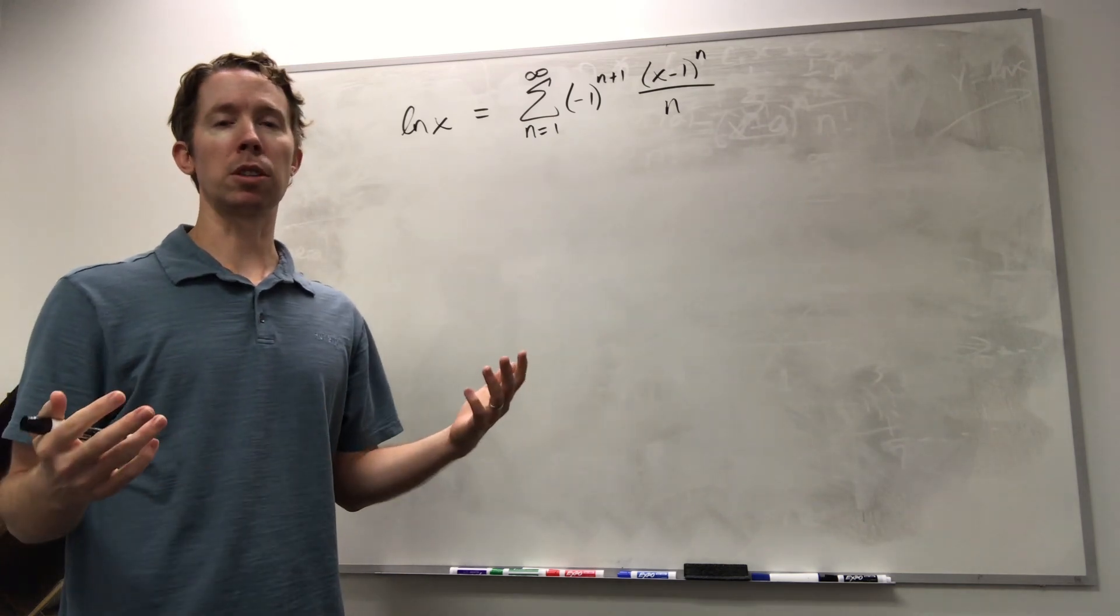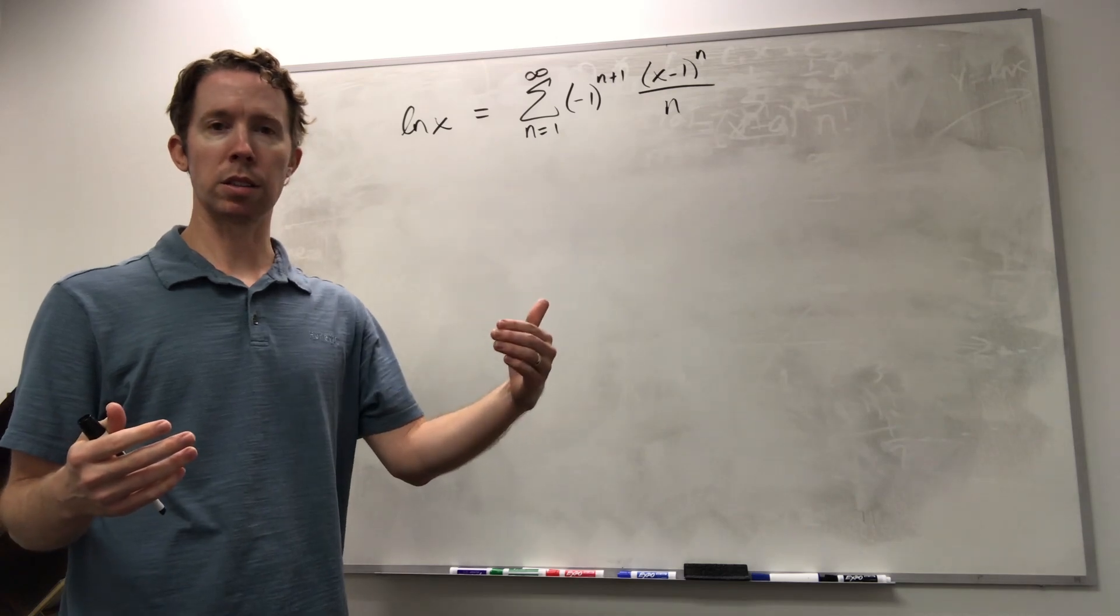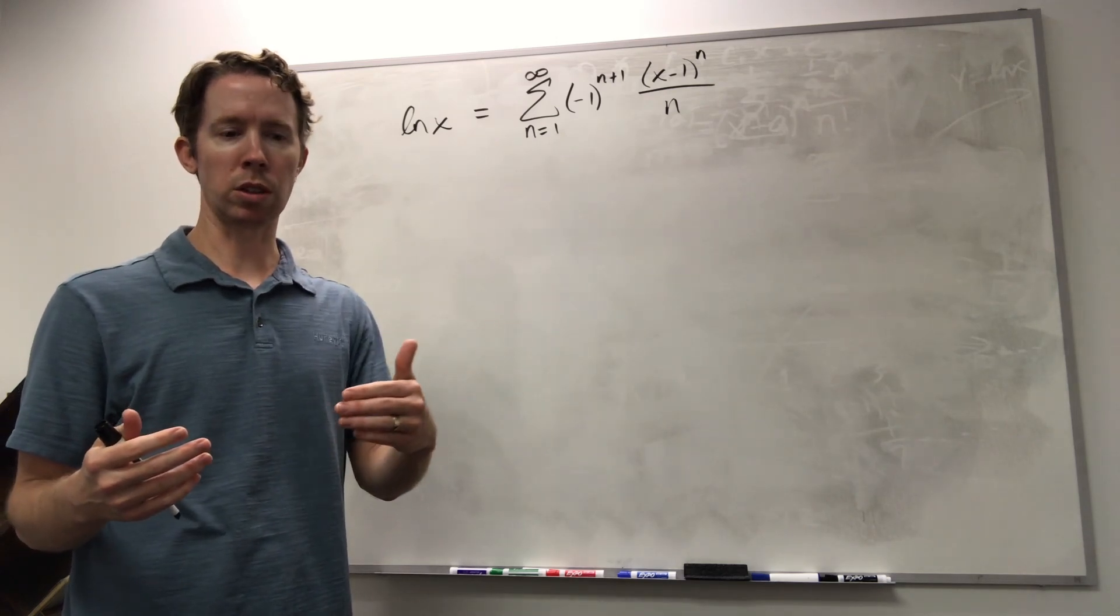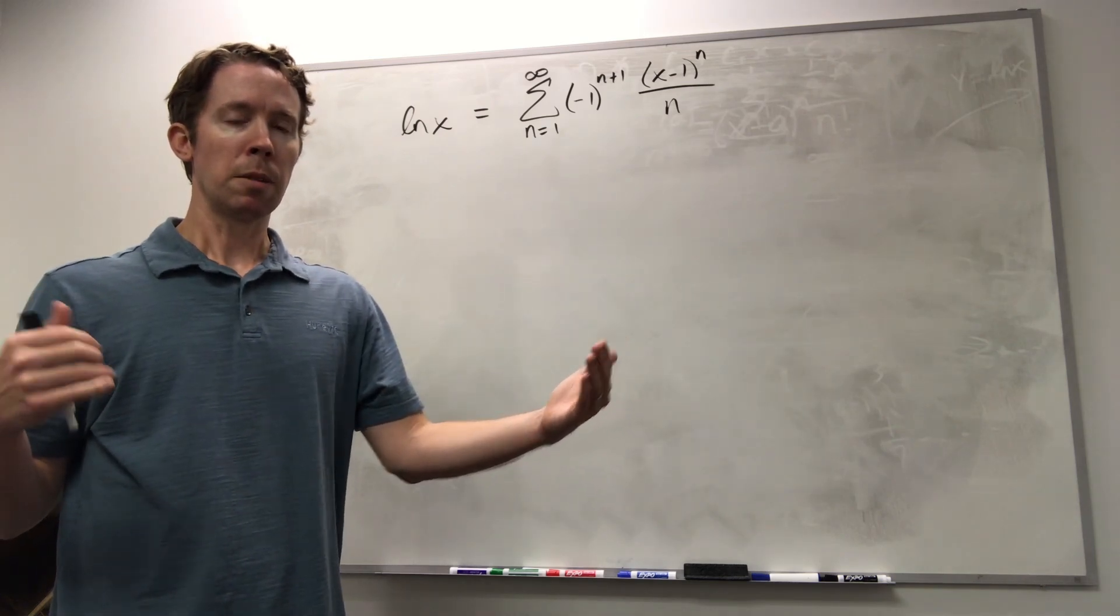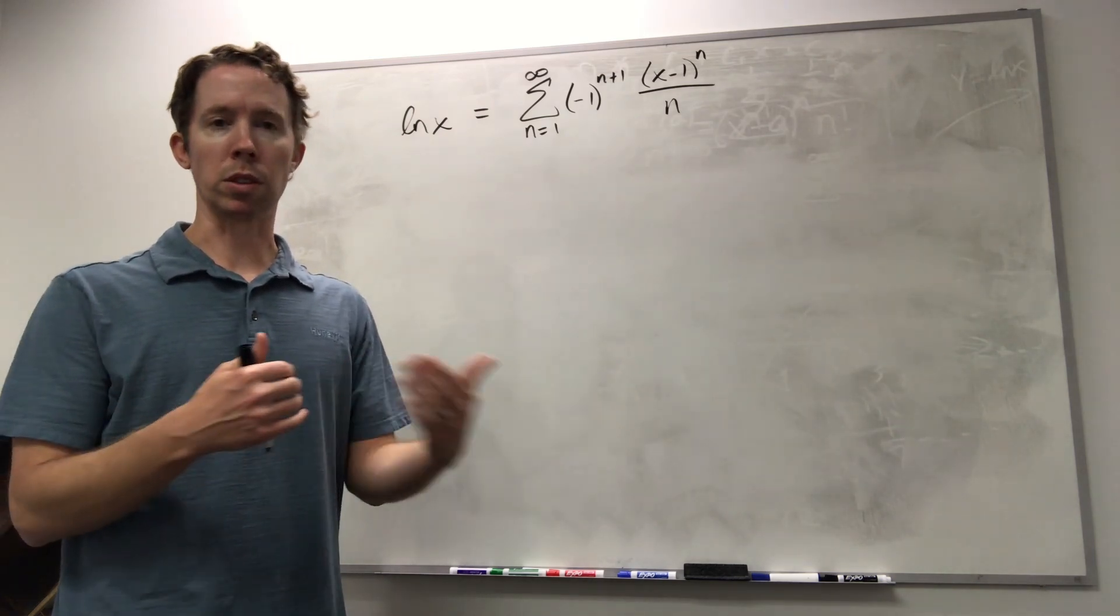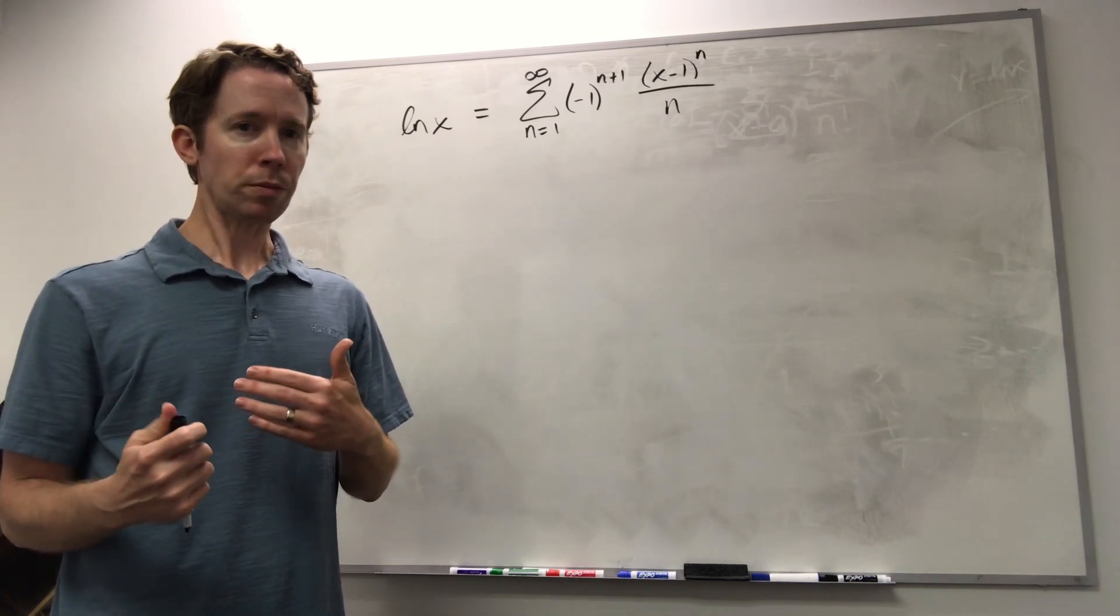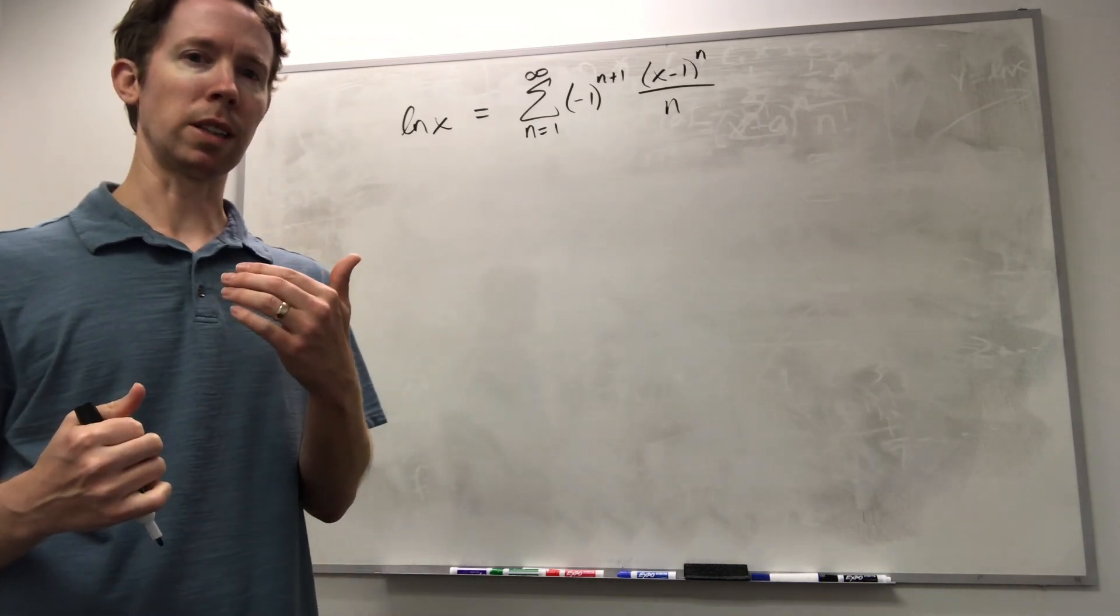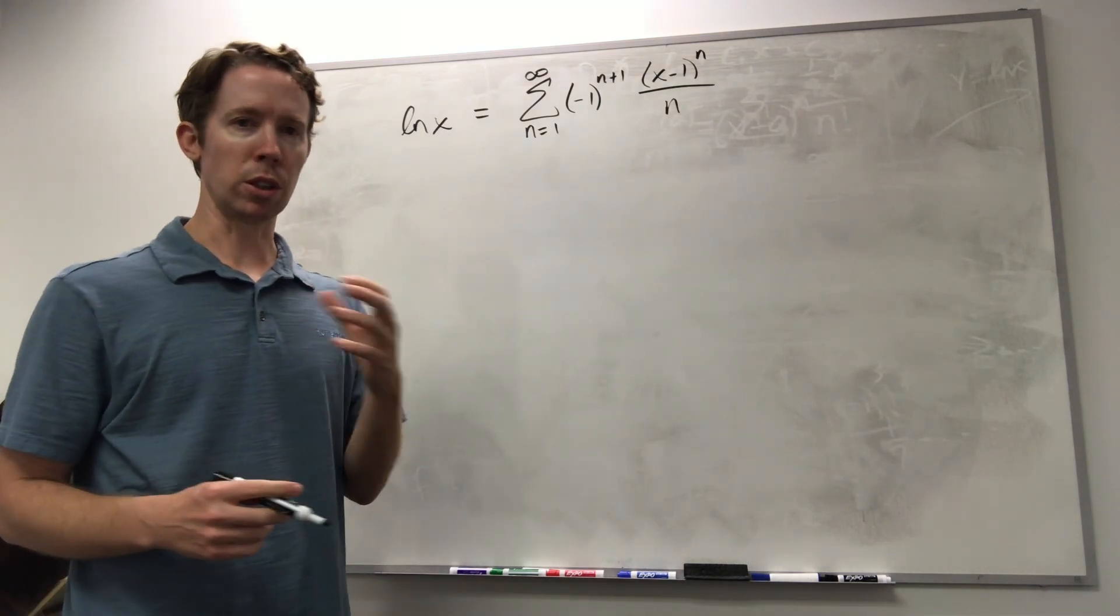For some functions, you'll find that the Taylor series does converge to the function - actually it may do it for all values of x in the domain - and then for others it will work for some values of x and not other values of x. It's really nice to be able to say when exactly this series will converge and when it won't.